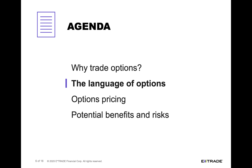Now let's talk about the language of options. There's actually a language around options, and just like you would learn another language, you start with a single word, then learn a couple of words and figure out how to put them together. Next you're speaking sentences and then phrases, and ultimately you're conversant in that language. We're going to do the same thing with options — learn some important terms or words within the language of options.